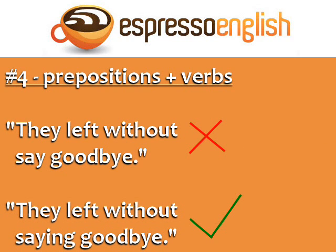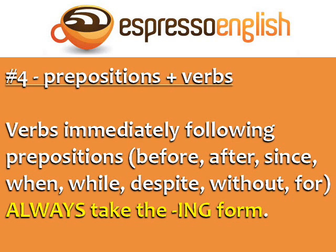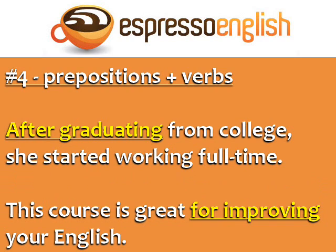Number four: prepositions and verbs. "They left without to say goodbye" is incorrect. The correct sentence is "They left without saying goodbye." Verbs immediately following prepositions — like before, after, since, when, while, despite, without, and for — always take the -ing form. Here are some examples: After graduating from college, she started working full-time. This course is great for improving your English.